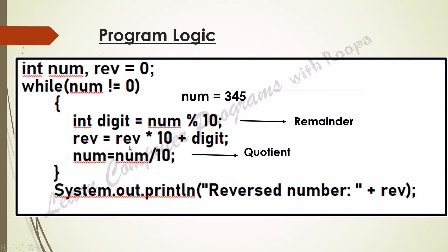And here, if you observe, when the mod operator is used, we get the remainder, and when a division operator is used, we get the quotient. So we have taken here the example as num equals 345.